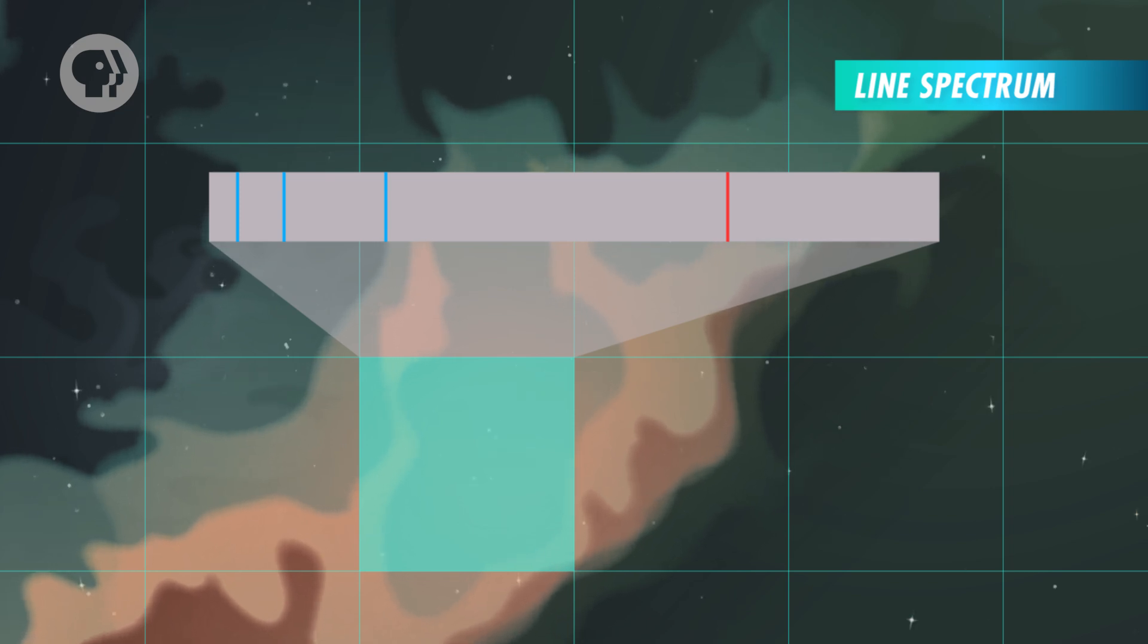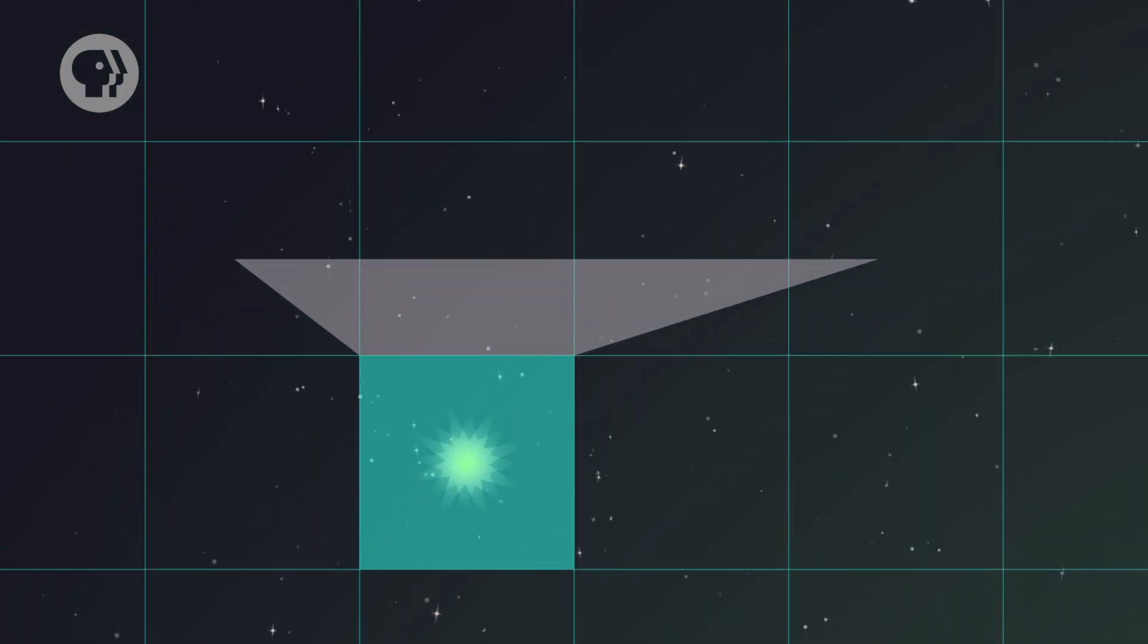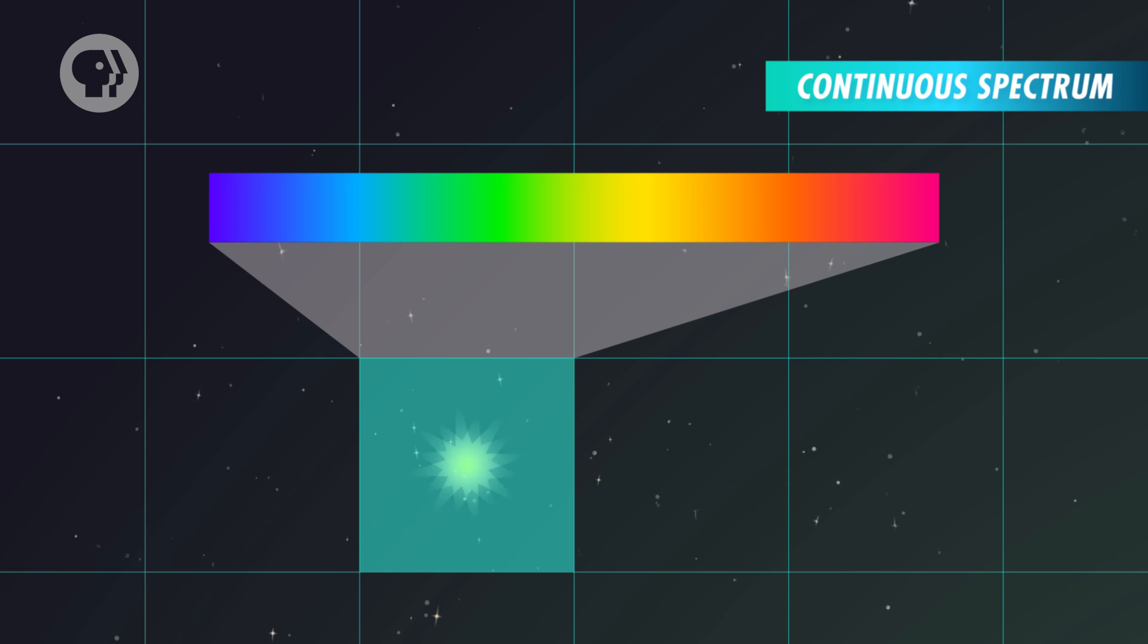Line spectra work for heated gases under the right low-pressure conditions. But when solid materials or high-pressure gaseous objects, like the sun, get heated up, they emit a continuous spectrum of light that covers a very wide range of wavelengths.